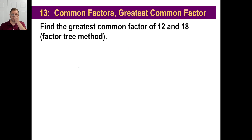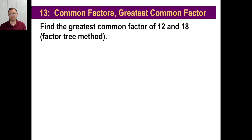There is a neat factor tree method where you never have to wonder if you're right about this. You can always do it. Find the GCF of 12 and 18. In other words, what's the biggest number that goes into 12 and 18? You can probably already know what it is — it's 6. It can't be 9 because 9 doesn't go into 12 evenly.